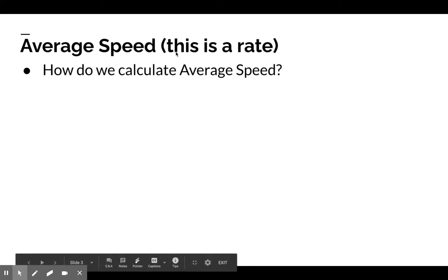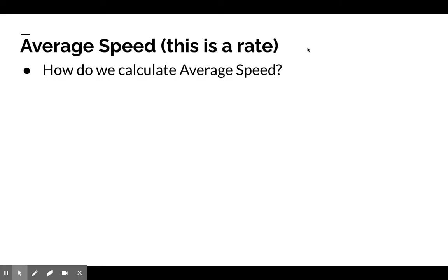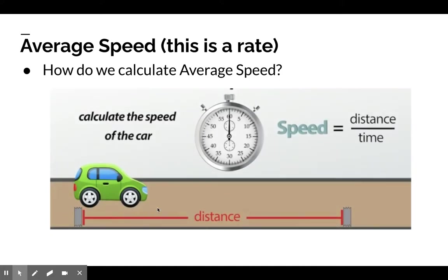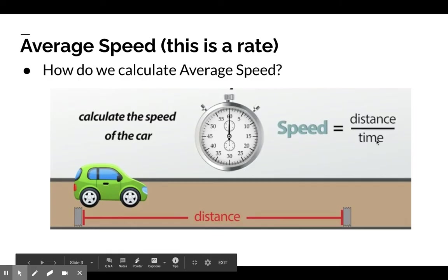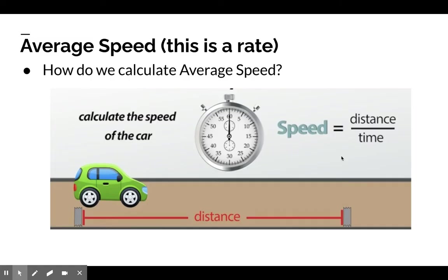Average speed. This is a rate. In math class, you often talk about rates, right? The change in something over time. We're going to talk about average speed, which is a rate and how we calculate it. You should be pretty familiar with this because you talk about speed in everyday life all the time, the speed of a car, for example. The speed of a car is calculated by how far that car goes in the amount of time it took to travel that distance. Speed equals distance divided by time.